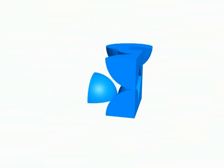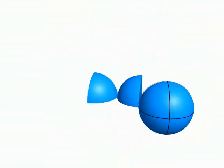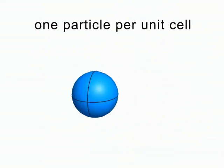We find the number of particles in one unit cell by combining all the particles' portions. In the simple cubic unit cell, eight corners, each of which is one-eighth of a particle, combine to give one particle.